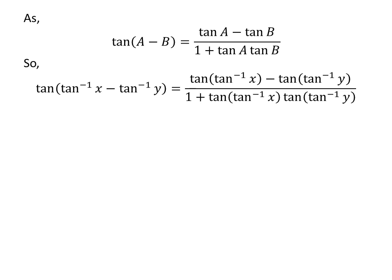So, tangent of arctangent of x minus arctangent of y is equal to (tangent of arctangent of x minus tangent of arctangent of y) upon (1 plus tangent of arctangent of x times tangent of arctangent of y).